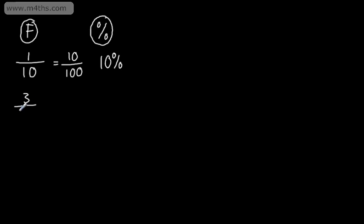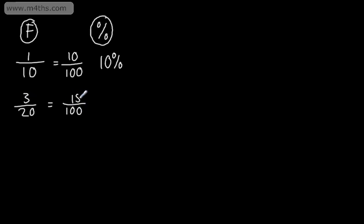Let's look at another one: 3 twentieths. I want to write this as a percentage. We can see that 20 is a factor of 100. I need to multiply this one by 5 to get 100. So if I multiply the denominator by 5, that gives me 100. If I multiply the numerator by 5, that gives me 15.